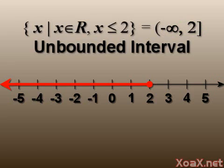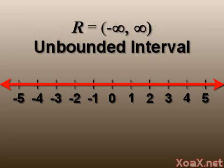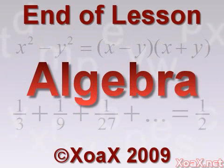Just as we have intervals that are unbounded above, we can have intervals that are unbounded below. For these intervals we use negative infinity to indicate that the interval is unbounded below. We can even write an interval that is unbounded on both sides. This interval is the entire set of real numbers. This concludes the lesson.